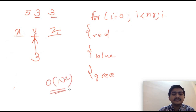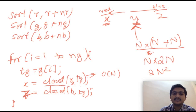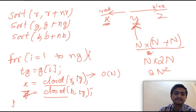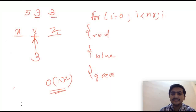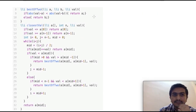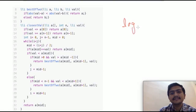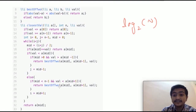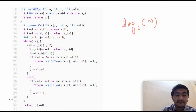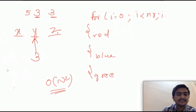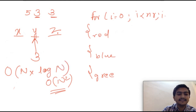Instead of a linear closest-value search, we can use the binary search function from the previous video to find the closest value in O(log N) time. This changes the inner search from O(N) to O(log N), making the overall complexity O(N log N), which should easily pass.